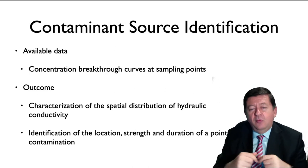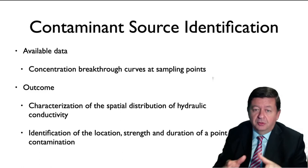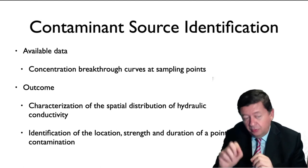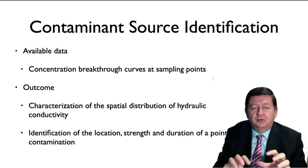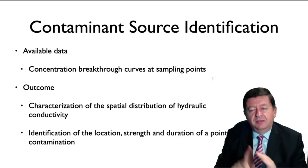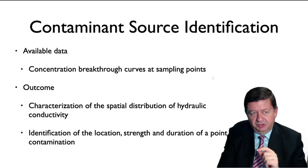The data we will be using will be concentration breakthrough curves at some sampling locations. We will put some observation locations in an aquifer and see how the solute passes through those locations. With only that information — breakthrough curves at different locations — we will be able to retrieve the heterogeneity of the aquifer, and also the location, the strength, and the duration of a point continuous contamination.